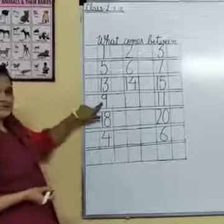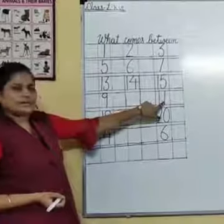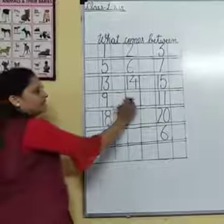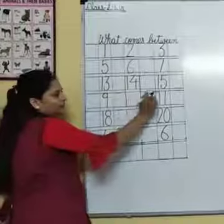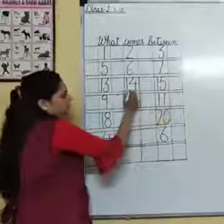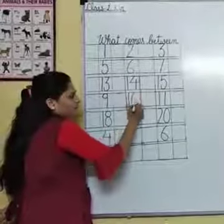Next, see, this one is number 9, and this one is 11. So what will we write here? Let's start counting: 9, 10, and 11. 10 is the between number of 9 and 11. Understand?